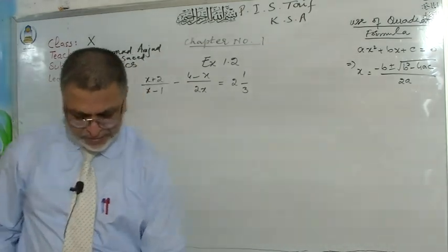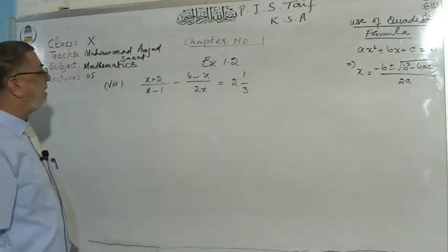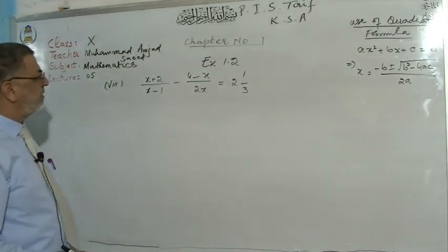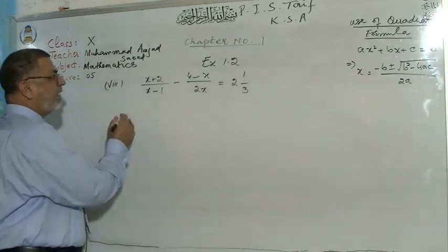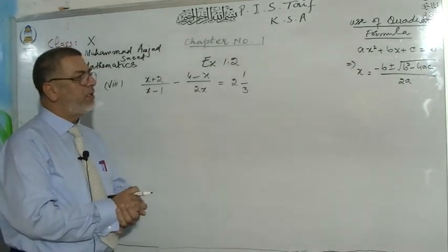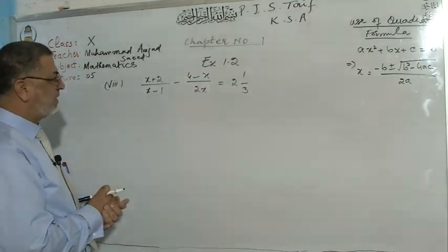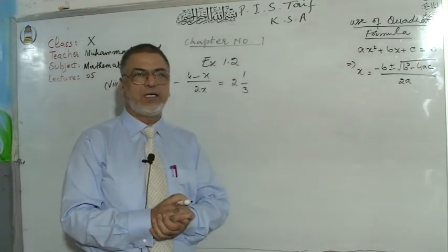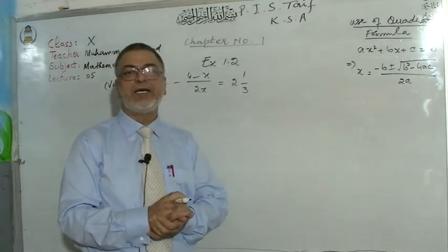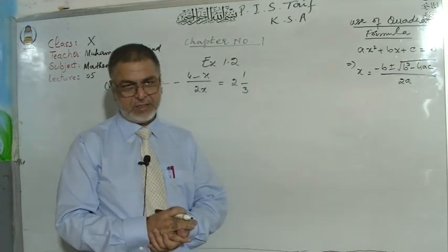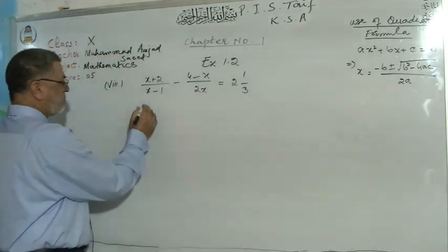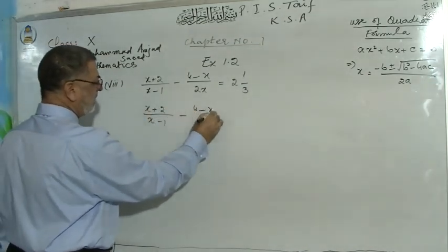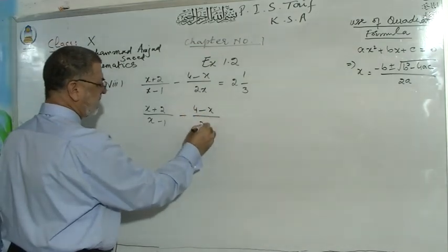This is part number 8 — parts 7 and 8 were similar, so I have chosen this part. First of all we have to convert into the form without fractions. If you want to convert the equation without fractions you have to multiply throughout by the LCM. So we have x+2 over x−1 minus 4−x over 2x equals 7 over 3.